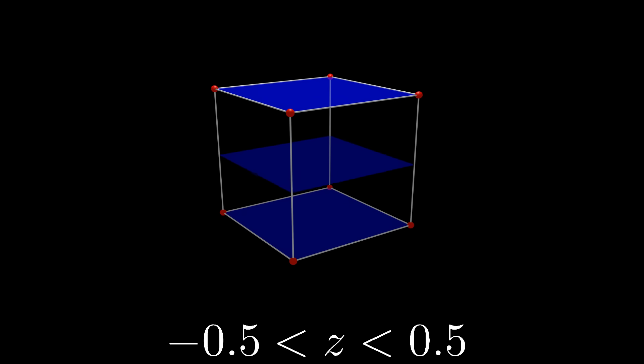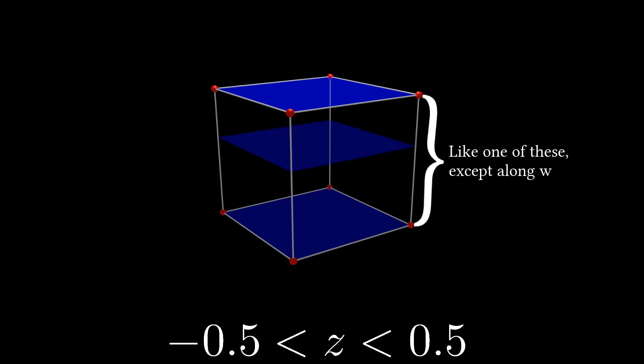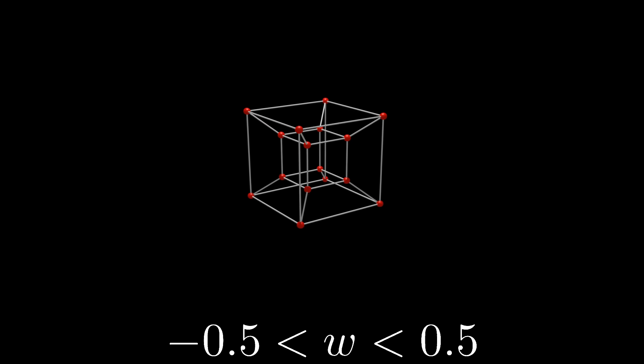This is kind of the visualization we'll be doing for our 4D tesseract. If we take a cross-section along the W dimension, let's say W equals negative 0.5, we'll find a three-dimensional cube. And if we move along the W dimension from W equals negative 0.5 to positive 0.5, we'll see that this cube scales in size.